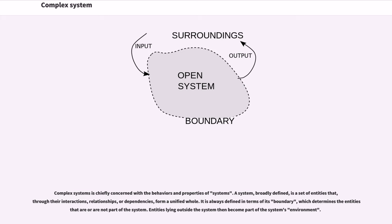Complex systems is chiefly concerned with the behaviors and properties of systems. A system, broadly defined, is a set of entities that, through their interactions, relationships, or dependencies, form a unified whole. It is always defined in terms of its boundary, which determines the entities that are or are not part of the system. Entities lying outside the system then become part of the system's environment.